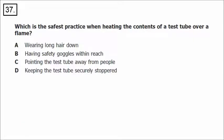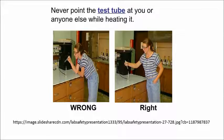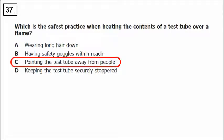Question 37 is a lab safety question. Wearing long hair down is a safety hazard because your hair might catch on fire near a Bunsen burner — you want to pull it back. Goggles should not be within reach; they should be worn covering your eyes, not your forehead. Keeping a test tube securely stoppered is a problem when heating because pressure can build up and it might explode. Pointing the test tube away from people is correct — you don't want it aimed toward anyone in case it splashes. The correct answer is C.